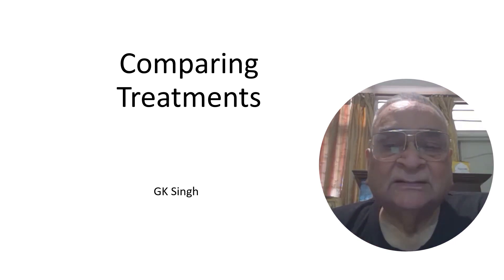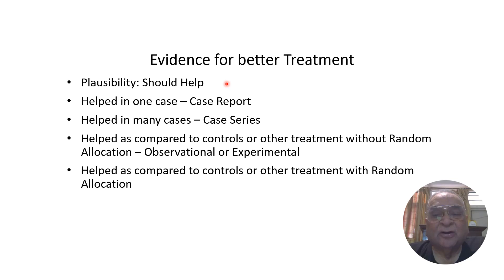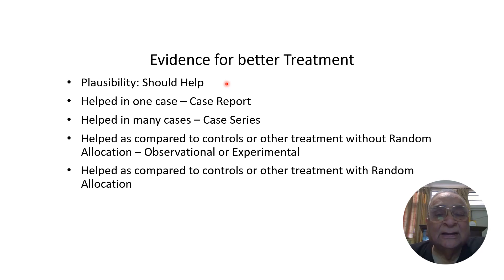Let us tell you how numbers can make you decide which treatment is better. The first thing we usually rely upon is plausibility — the mess caused by bronchoconstriction, so a bronchodilator should help. But now there is a paradigm shift. Nobody believes in 'should help' anymore; they only believe in 'did it help.' So 'should help' has been converted to 'did it help,' and therefore that has to be supported by numbers.